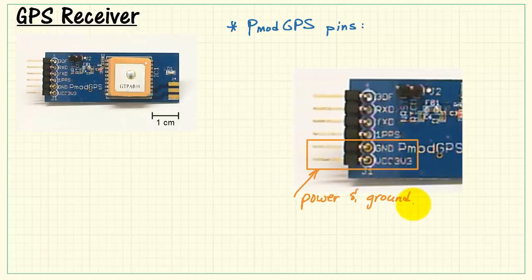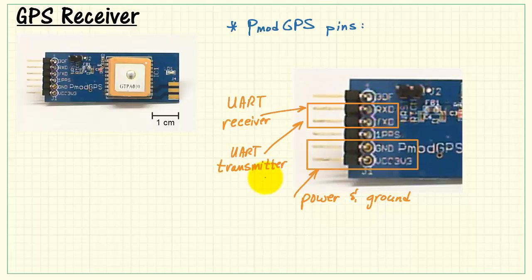Take a look at the details of the pins. To begin with, we have the power supply connections. That's your power and ground. Here we have the UART connections. We have the UART receiver, RXD, that's the input, and the UART transmitter, TXD, that would be the output from this board. Here's the one pulse per second signal.